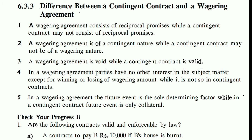The third point: a wagering agreement is void, while a contingent contract is valid. Void means it is not valid, it is not enforceable. But if you talk about a contingent contract, it is valid.